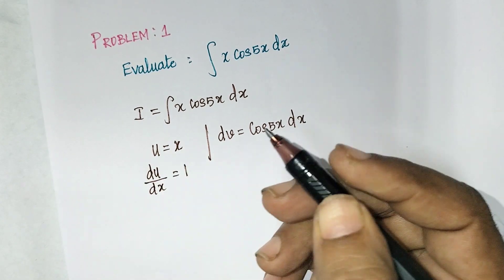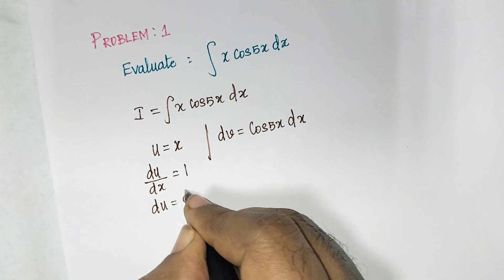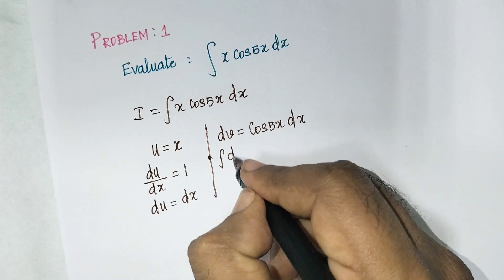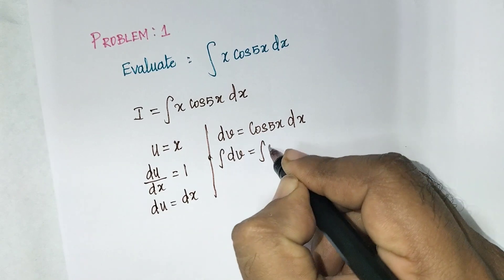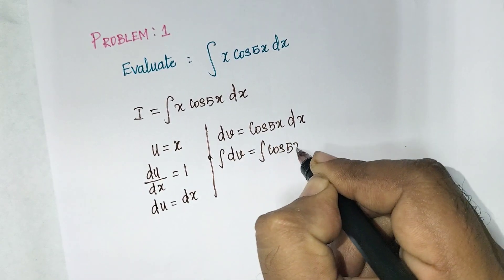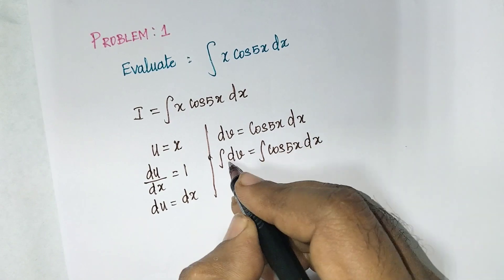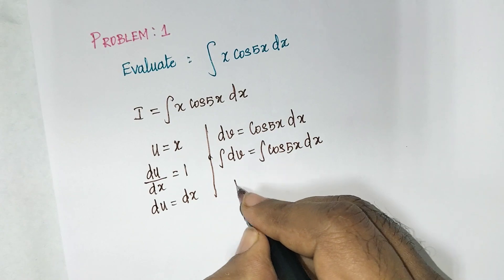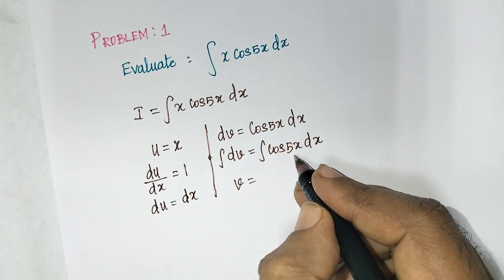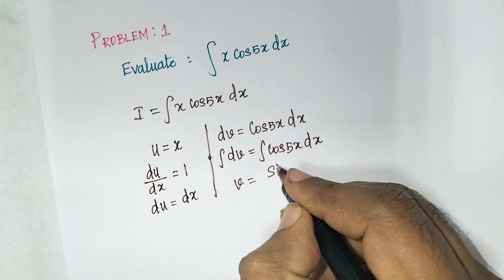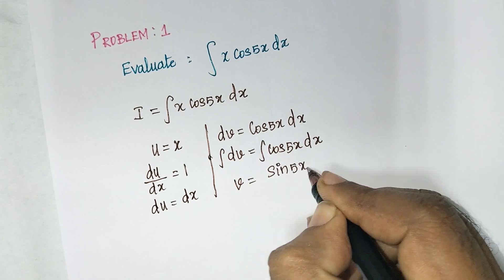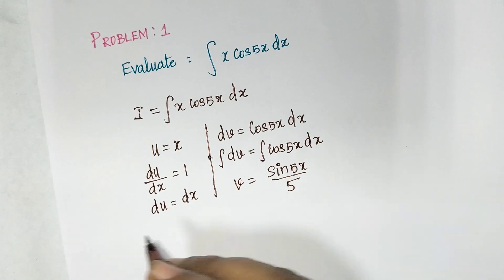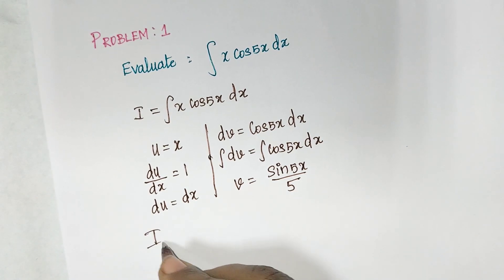So du equals dx. Now integrate both sides: dv equals integral of cos(5x)dx. Here there is no extra term, it is a constant integration, so v equals sin(5x) divided by 5. Now we know du and v.